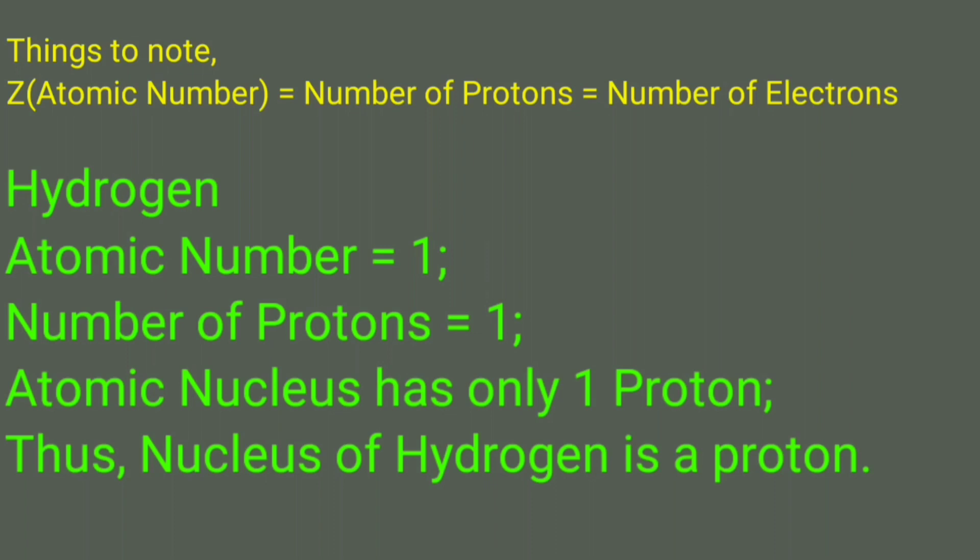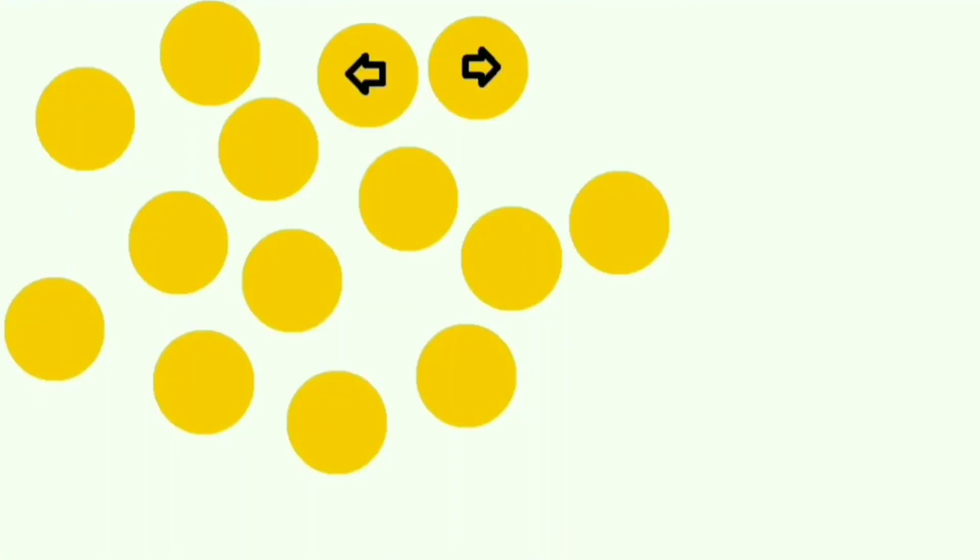Atomic nucleus has only one proton. Thus, the nucleus of hydrogen is a proton. Here we can see the hydrogen atoms that are aligned in different directions.